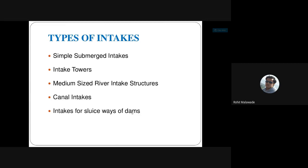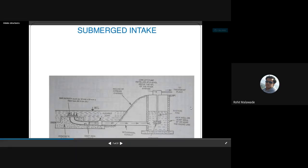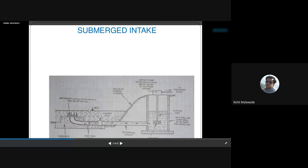The types of intake structures are: simple submerged intake structure, intake towers, river intake structures, canal intake structures, and canal intakes with sluice gates of dams. In a submerged intake structure, the intake pipe is constructed over the inclined stream channel. The intake pipe should be fixed with bar screens and a strainer is located at the pipe entrance.